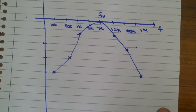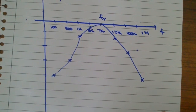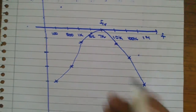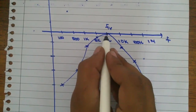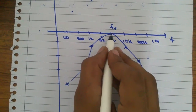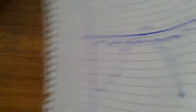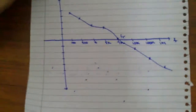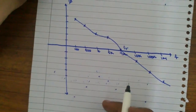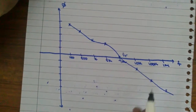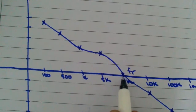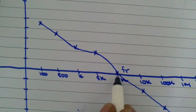Here we have the graph of dB versus frequency. At the critical frequency, the gain is maximum. And here is the graph of phase angle versus frequency — at the critical frequency, the angle is nearly zero.